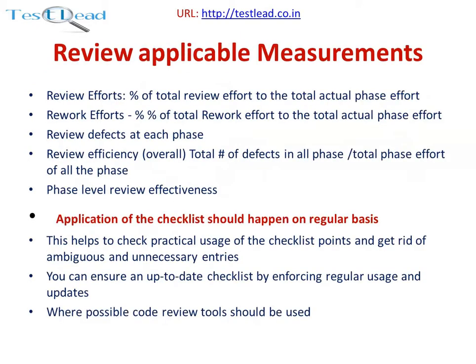Review applicable measurements include: review efforts — percentage of total review effort to total actual phase effort; rework efforts — percentage of total rework effort to total actual phase effort; review defects at each phase; review efficiency; overall review efficiency — total number of defects in all phases divided by total phase efforts of all phases; and phase-level review effectiveness.